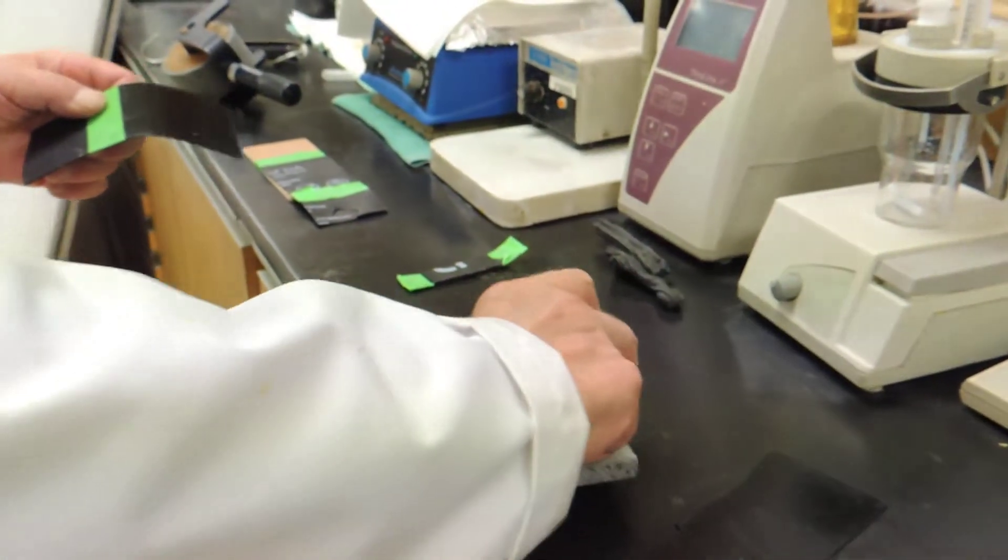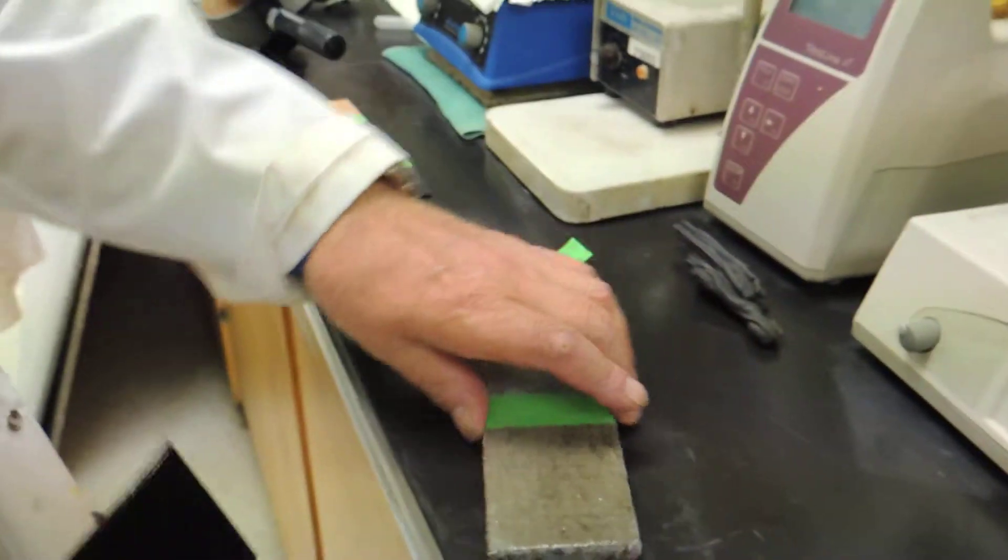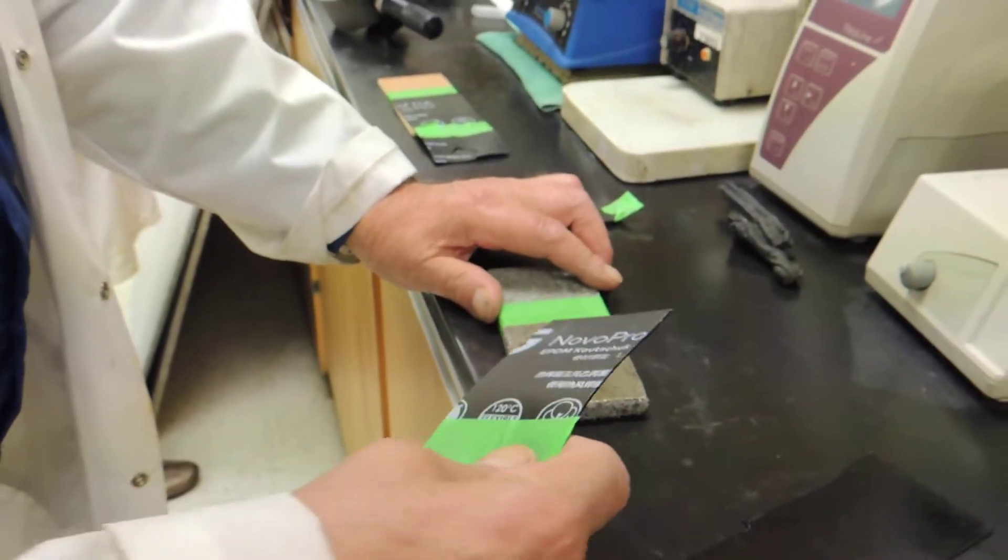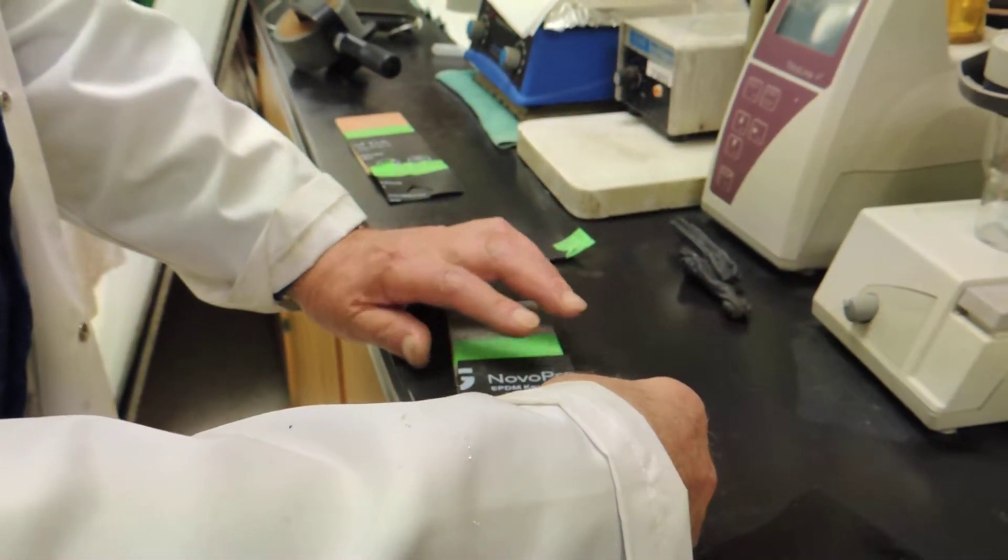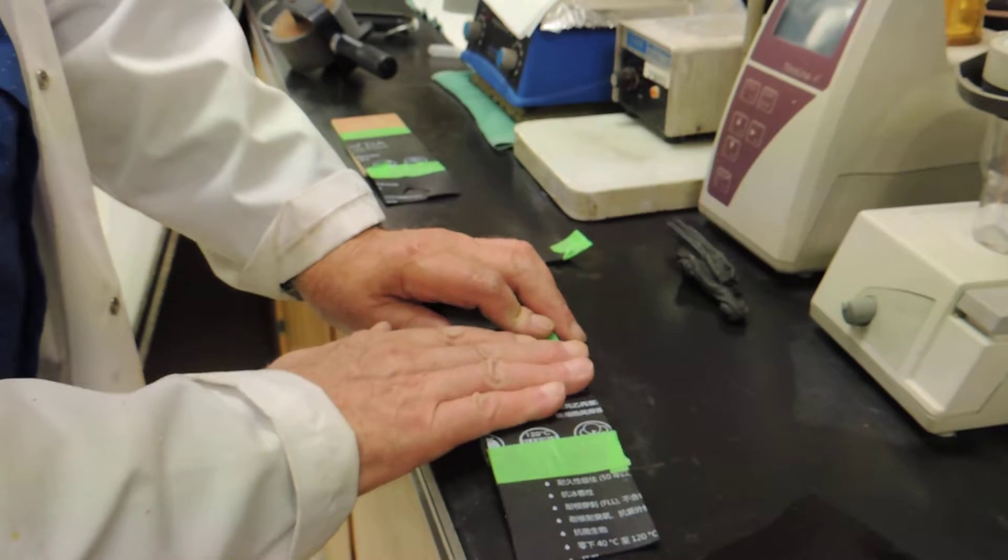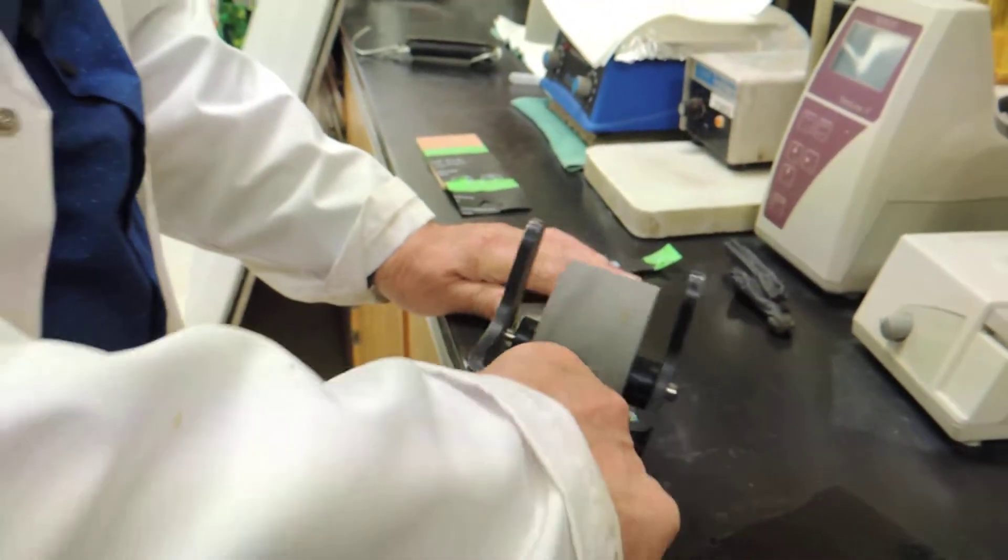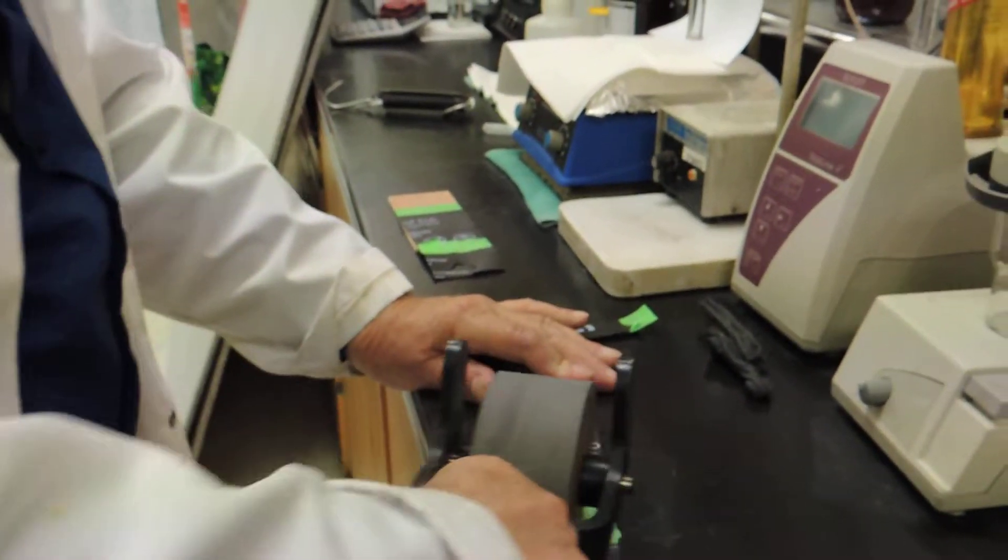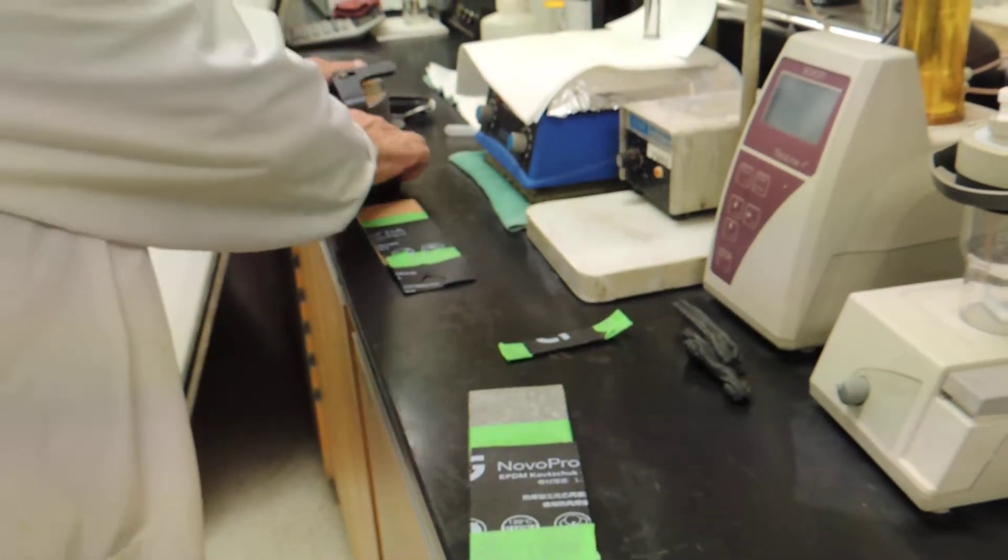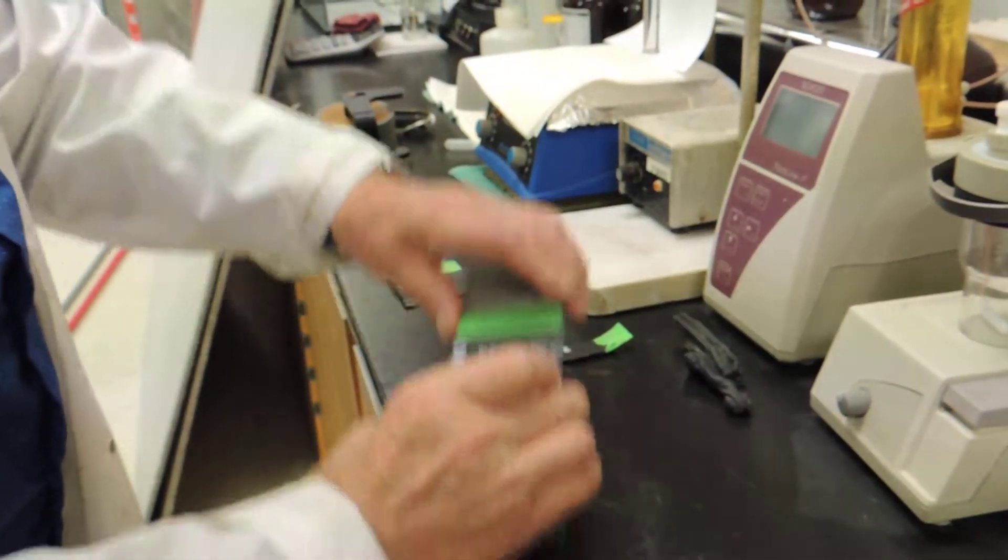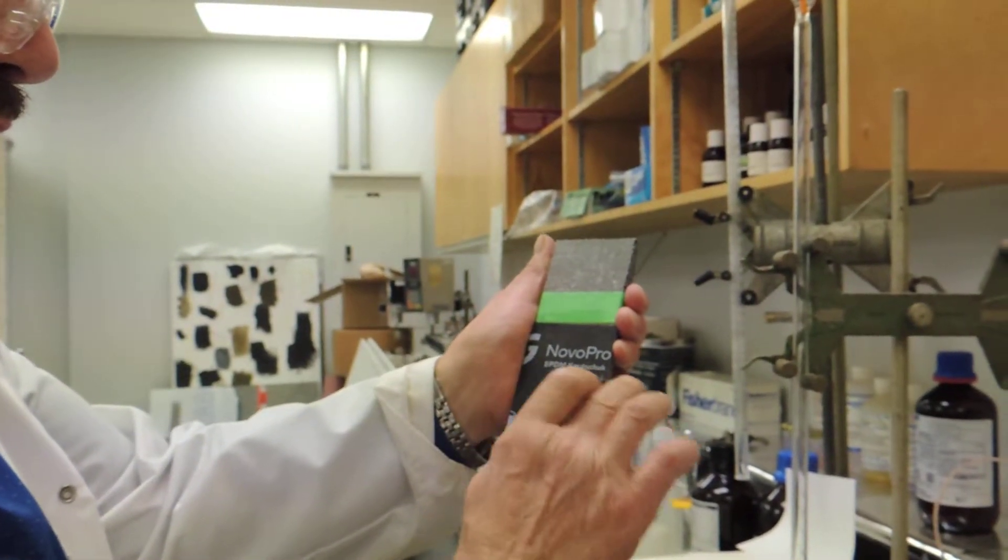We will now apply EPDM BONTAC ECO1500 coated on EPDM to a concrete panel. Apply some pressure. As you can see, Novaproof EPDM Couchuk.